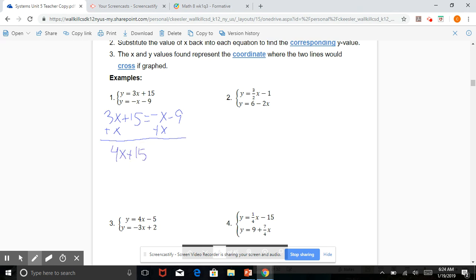I'm going to add x to both sides, which results in 4x plus 15 equals negative 9. Then I'm going to subtract 15, which results in 4x equals negative 24. And then I'm going to divide by 4, resulting in x equals negative 6.